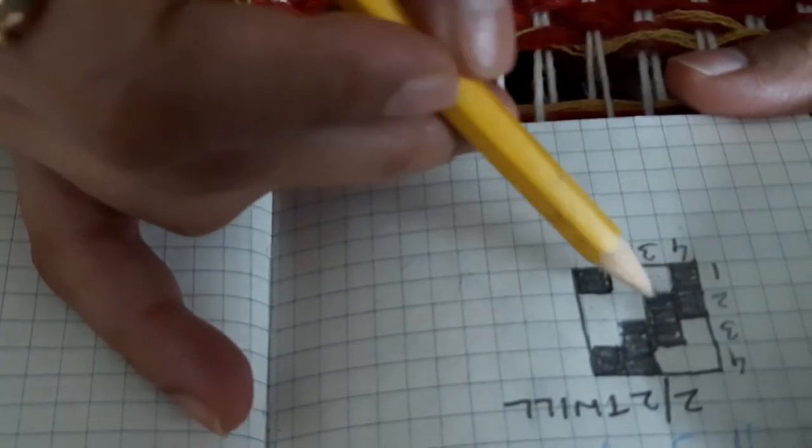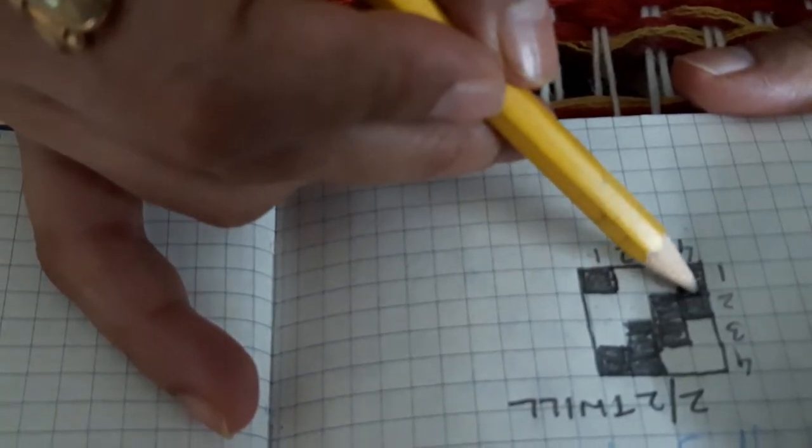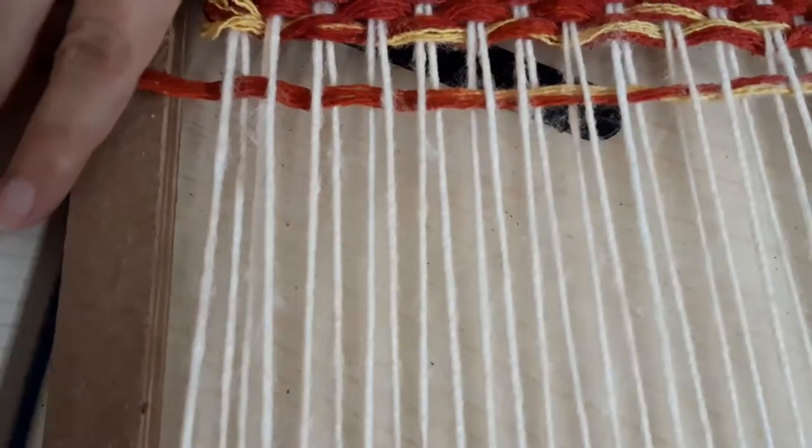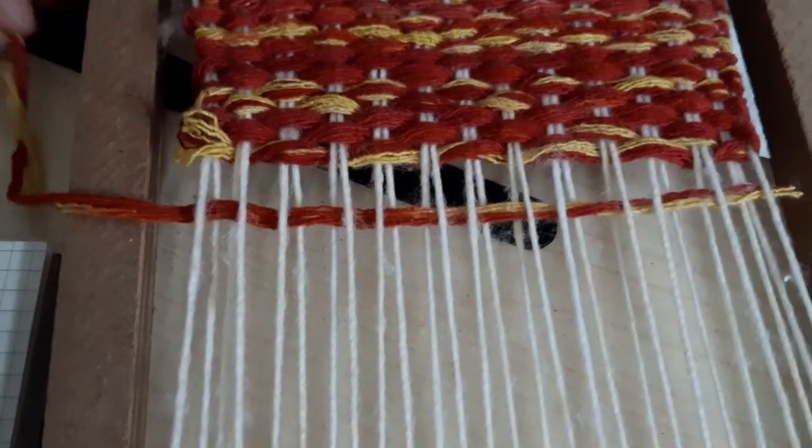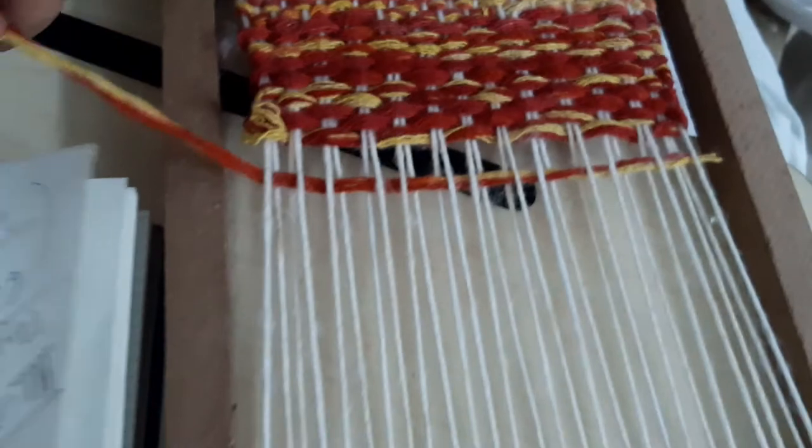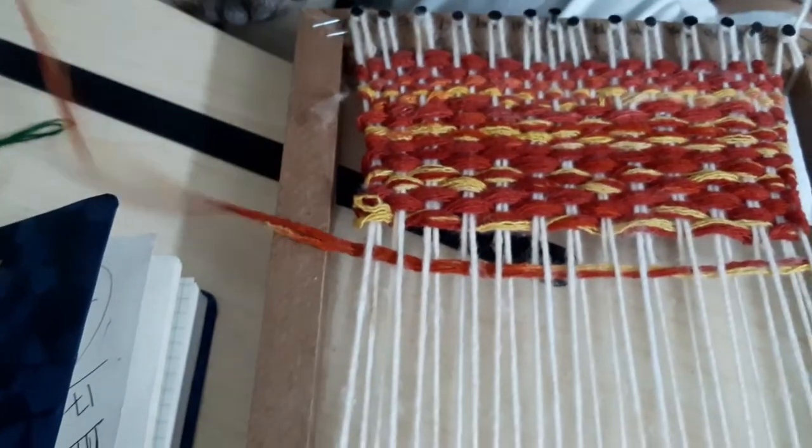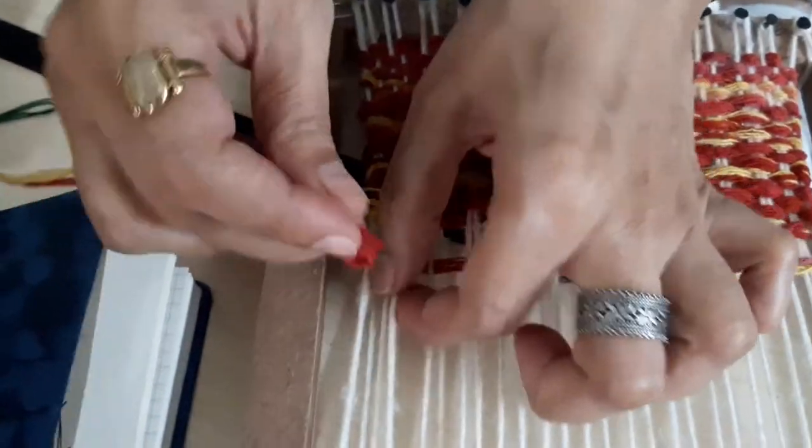In the second interlacing, yarn three and four are up. So we have to see yarn three and four. Three and four will be up. This is simple because we have one, two, three, four, so three and four is up.